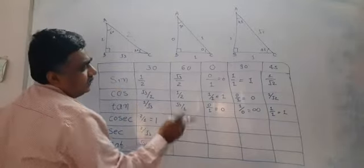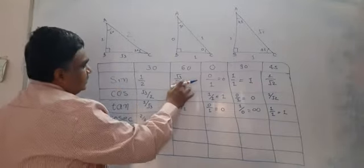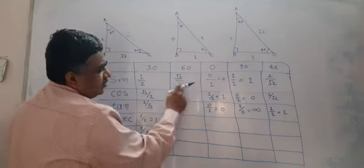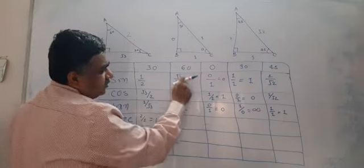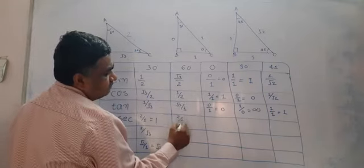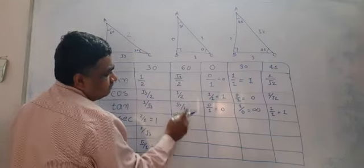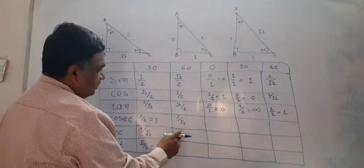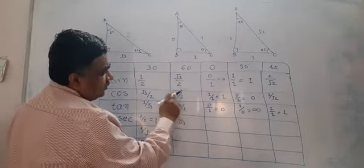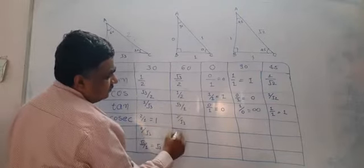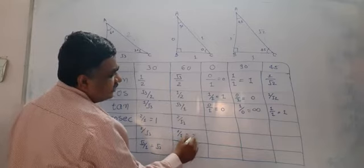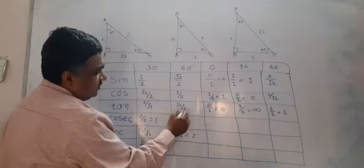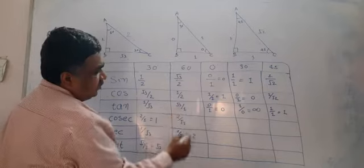Now going here — cosec 60 gives 2 upon root 3. Sec 60 gives 2 upon 1, which becomes 2. And cot 60 gives 1 upon root 3.